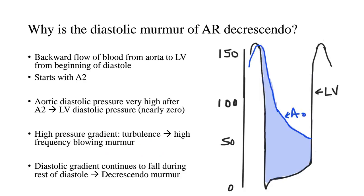The murmur in aortic regurgitation is a diastolic murmur — but why is it decrescendo? There is backward flow of blood from the aorta to the left ventricle right from the beginning of diastole. The event that just precedes this leakage is the second heart sound, specifically A2 — that is, closure of the aortic valve. At the end of systole, A2 signals the end of systole, and since the valve leaflet is not working well, the valve starts leaking. So this murmur begins with A2.